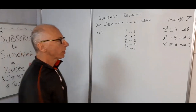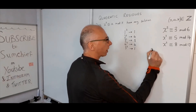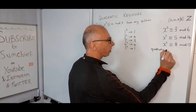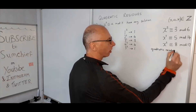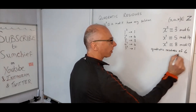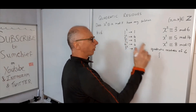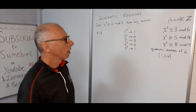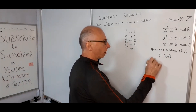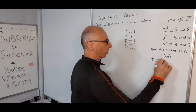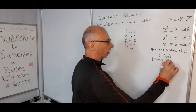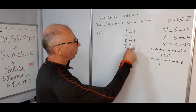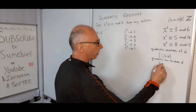So the quadratic residues of 6 are 1, 3, and 4. And the quadratic non-residues of 6 are 2 and 5.